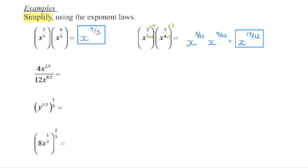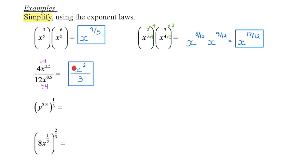In this next one, we have four divided by twelve, so we can go ahead and reduce that. Four is the largest number that divides evenly into both numerator and denominator. We are now dividing powers with the same base, so we're going to subtract the exponents. Two point five minus zero point five is two, so we leave this as x squared divided by three. We have a coefficient of one here, but we don't need to write that down.